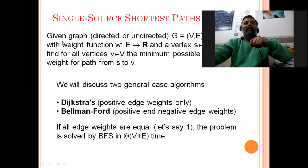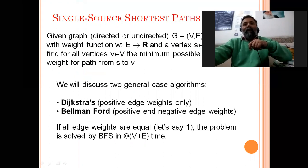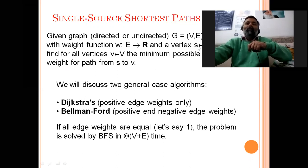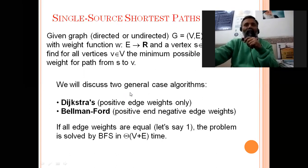A definition: suppose we have a graph — which may be directed or undirected — and we have a weight function so for each edge there will be some weight, and that weight will be a real number. Suppose we have a source node s; the problem is to find, for all other vertices v, the minimum possible weight for the path from source node s to all other nodes v.